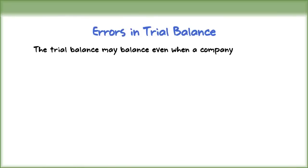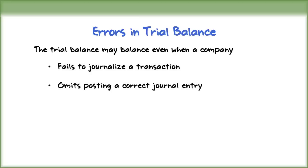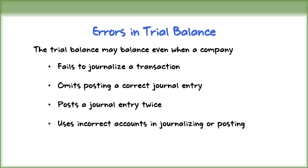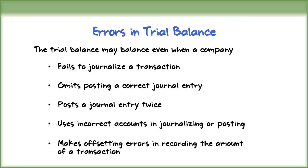Next, let us understand the types of errors in trial balances. A trial balance does not prove that a company has recorded all transactions or that the ledger balances are correct. Numerous errors may exist even though the debit and the credit columns agree. For instance, a trial balance may balance even when the company fails to journalize a transaction, omits posting a correct journal entry, posts a journal entry twice, uses incorrect accounts in journalizing or posting, or makes offsetting errors in recording the amount of a transaction.